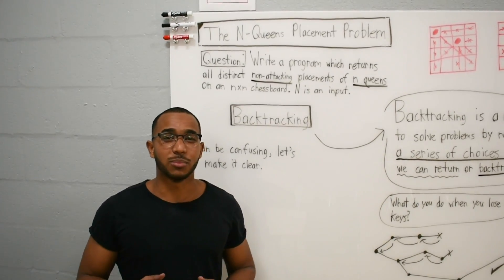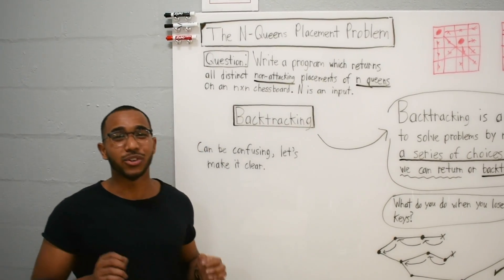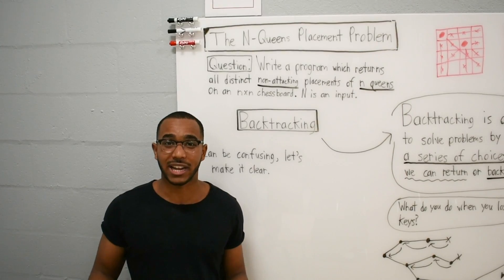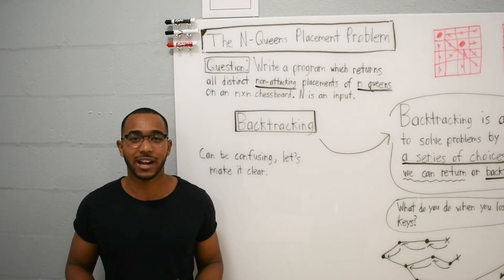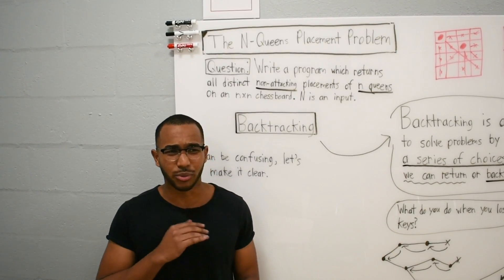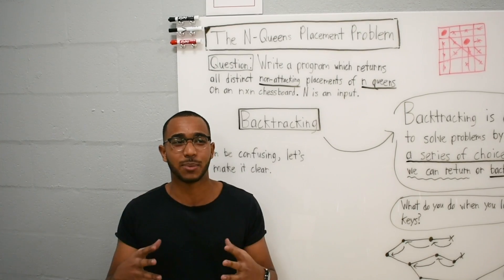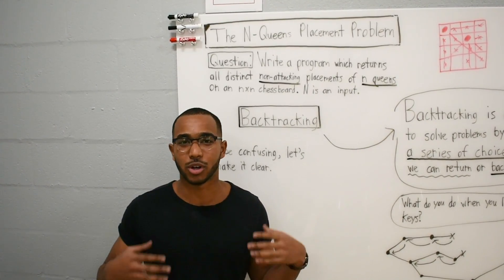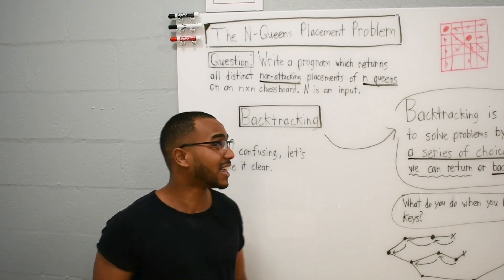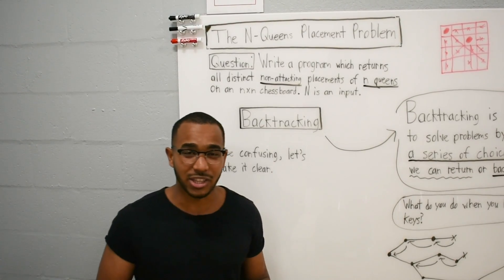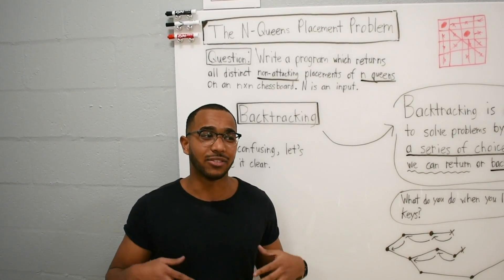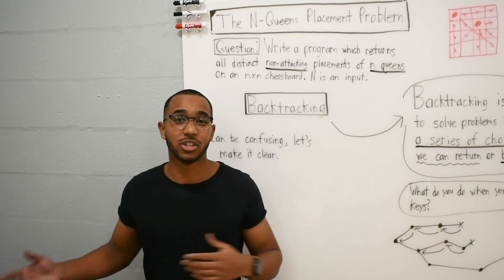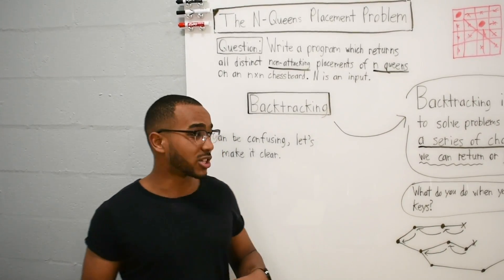Alright guys, so today we're going to be doing the N-Queens placement problem. This is a very famous backtracking problem, and it's a problem that I struggled with. It took me three or four months to really grasp and understand the idea of backtracking because I had weak roots in recursion. But my goal today is to make this problem, the solution, and how to adapt the solution for other backtracking problems very clear.